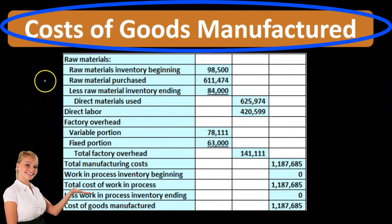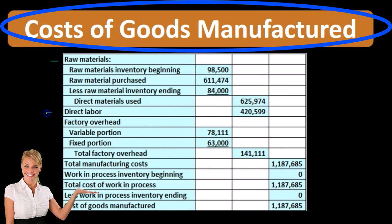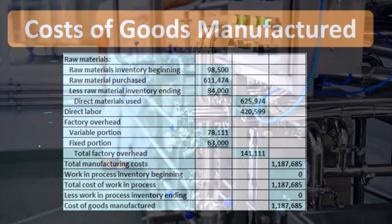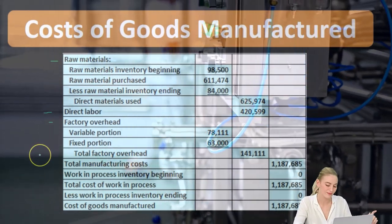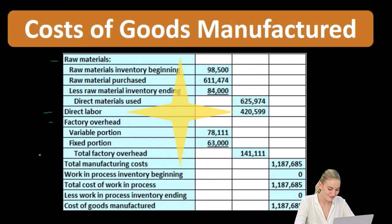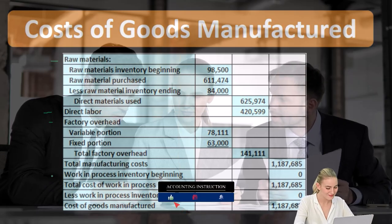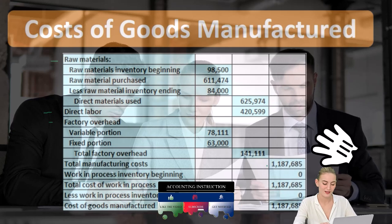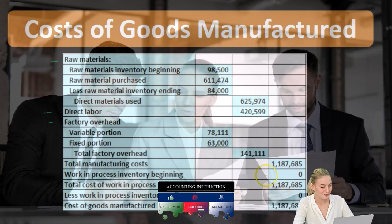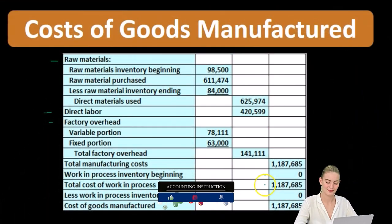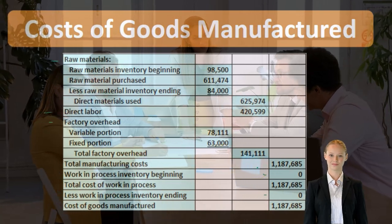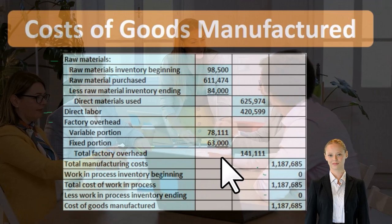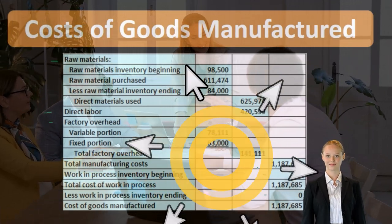Components of cost of goods manufactured will be raw materials, direct labor, and factory overhead. These components are typically calculated for the month or the year, and that gives us the total manufacturing costs for that time period. If we had any work in process at the beginning or the end, we would have to account for this. Total manufacturing costs plus beginning work in process gives us the amount available, minus ending work in process gives us the cost of goods manufactured, which can then be used in the cost of goods sold calculation.